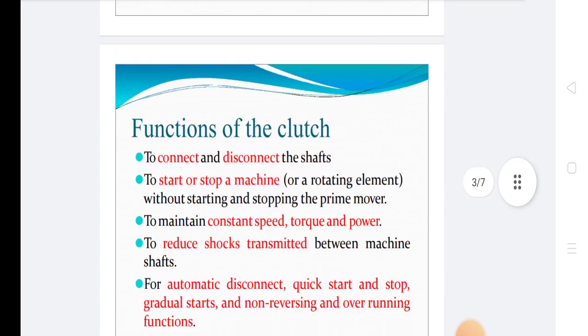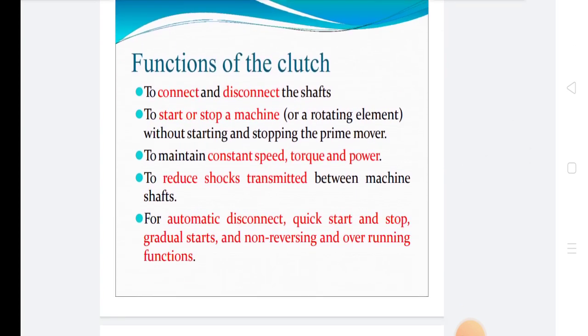There are two types of clutches. The clutches are classified into two major categories like positive clutches and friction clutches. In positive clutches, the clutches are used when the positive drive is required. The simplest type of positive clutch is a jaw clutch which permits one shaft to drive another shaft by direct contact between the interlocking jaws.